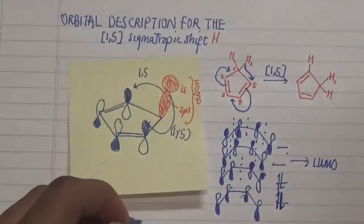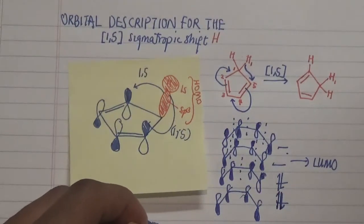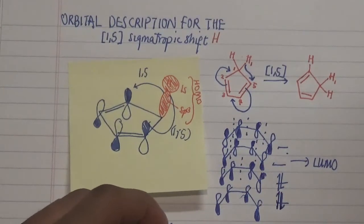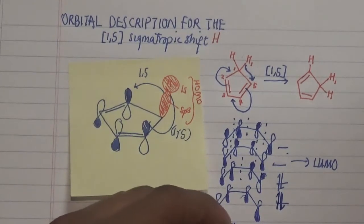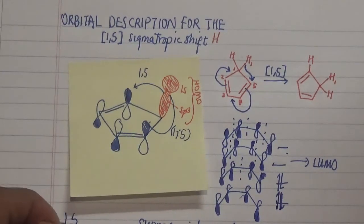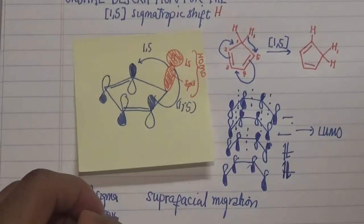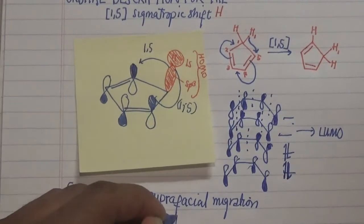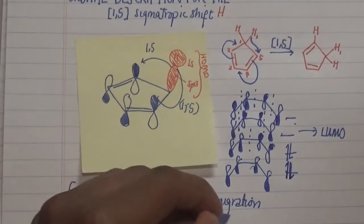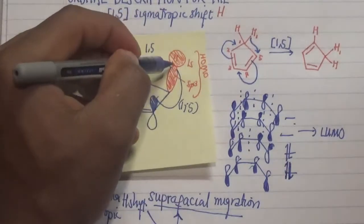Which is really important in here because if it occurs in a suprafacial migration state, then we can conclude that the 1,5 sigmatropic hydrogen shift is a suprafacial migration process going from one carbon to the other carbon.